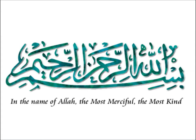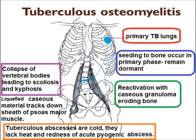In the name of Allah, the most merciful, the most kind. Today we are going to discuss tuberculosis osteomyelitis, which is secondary to TB in the lungs. Seeding to bone occurs in the primary phase and remains dormant, with reactivation causing caseous granuloma eroding bone.